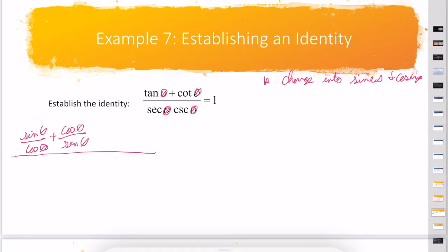Secant times cosecant is 1 over cos θ sin θ. So my denominator, I'm going to erase a little of this to have more room, is 1 over cos θ sin θ, but my numerator...